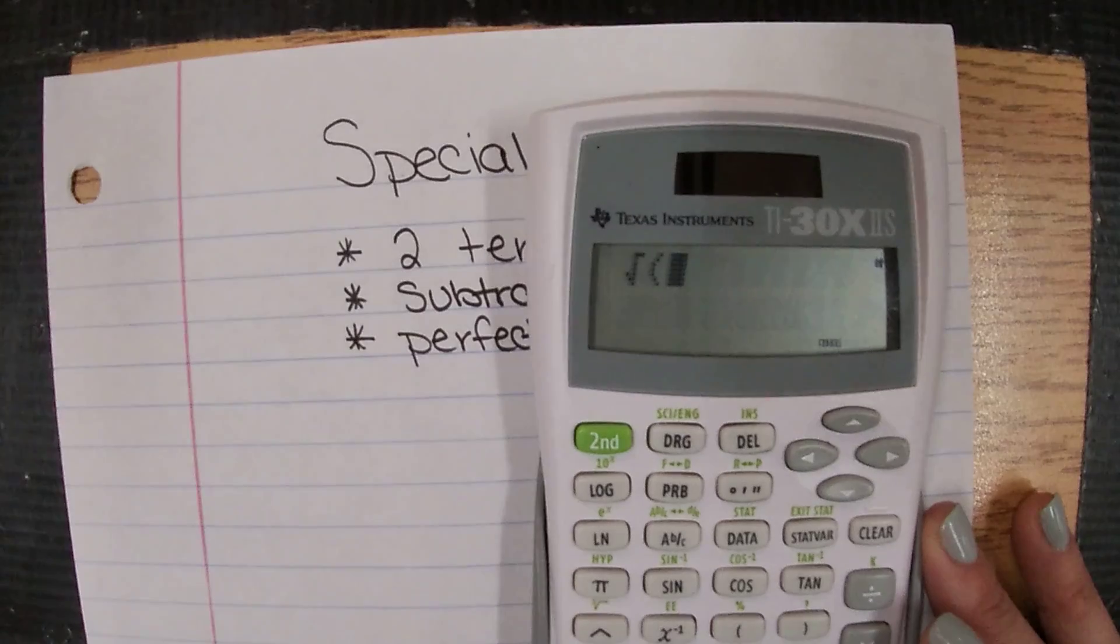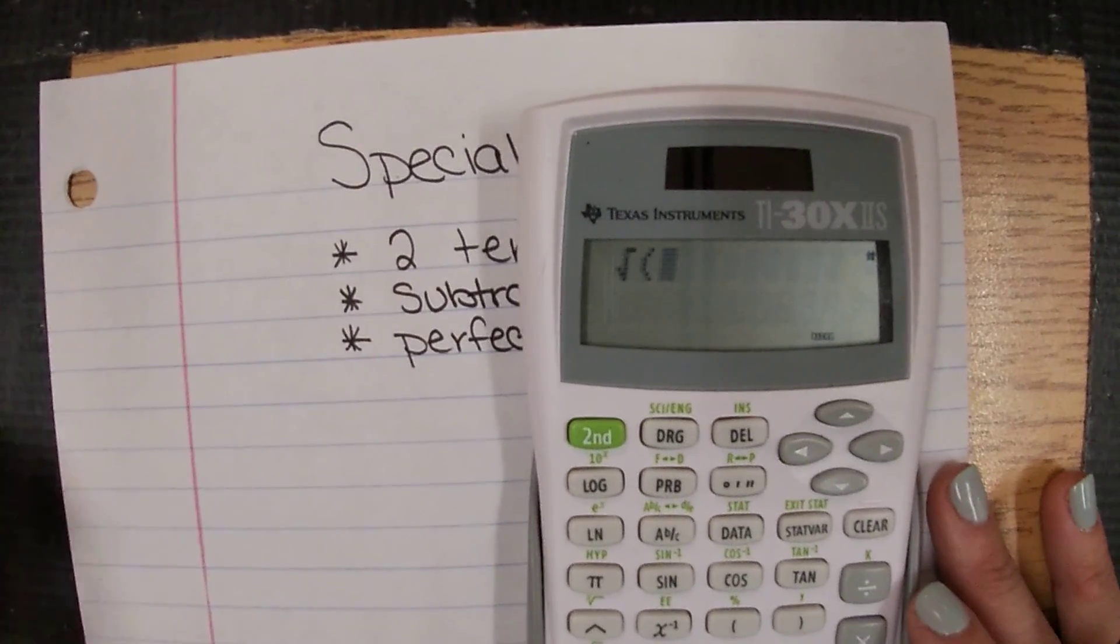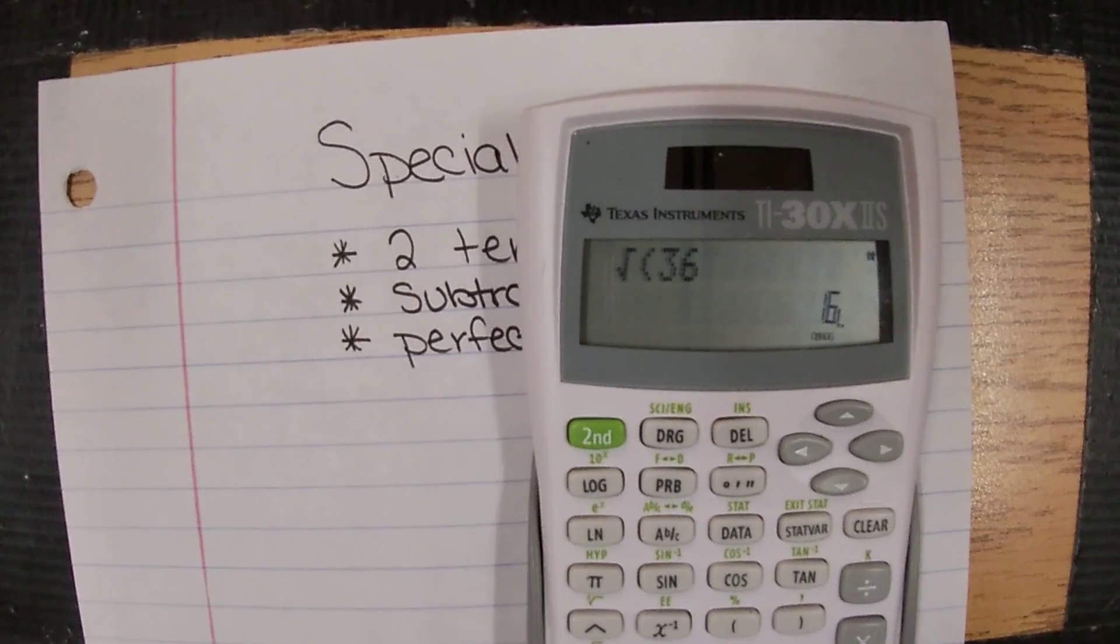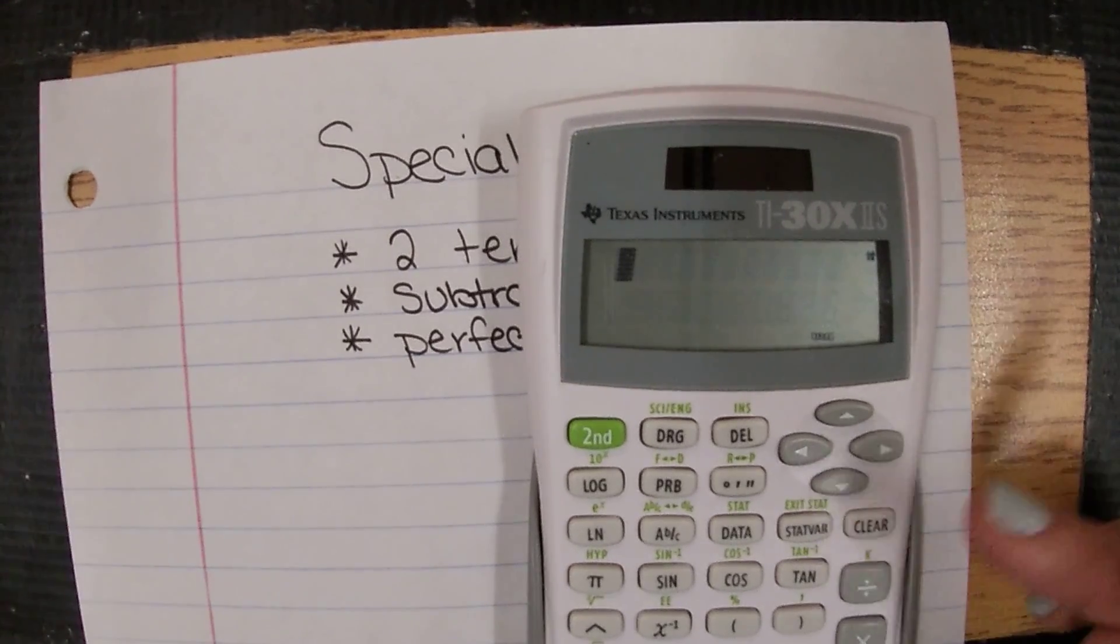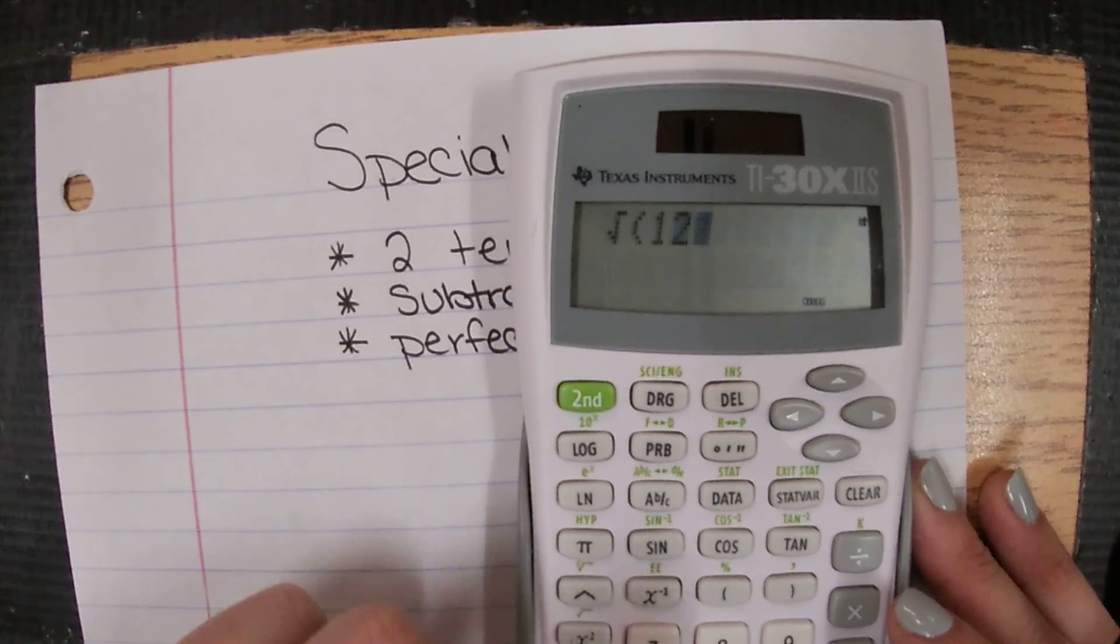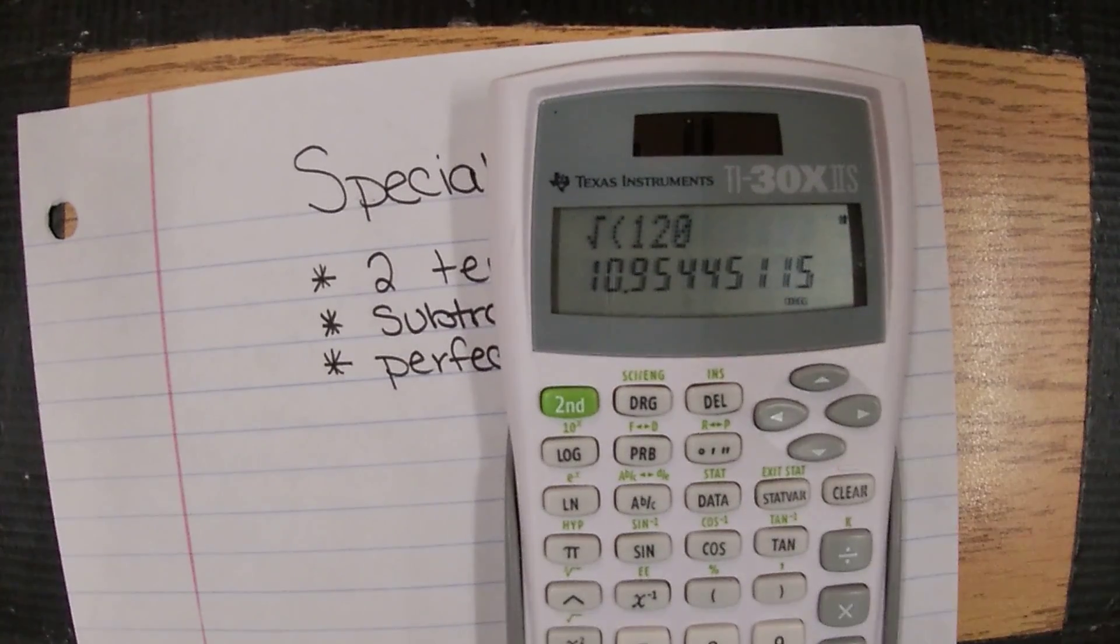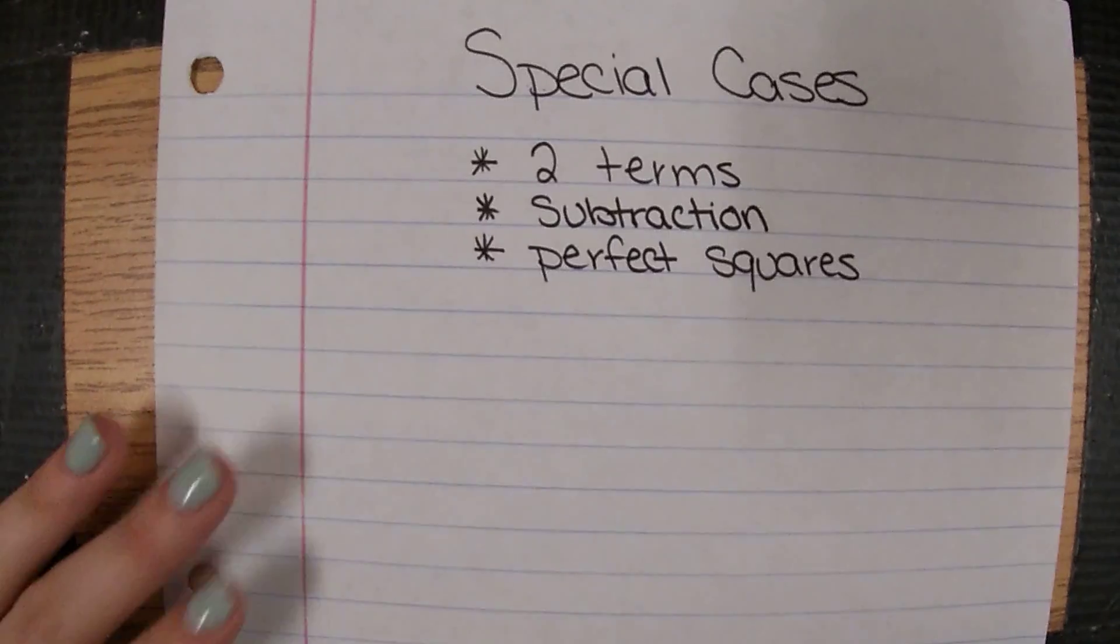If you're not sure if 36 is a perfect square, you do second, x squared, type in 36 and hit equals, and it gives you 6, so we know it's a perfect square. Now if it's something like 120, you do second, x squared, 120, and we get this big long messy decimal, so that means it is not a perfect square.